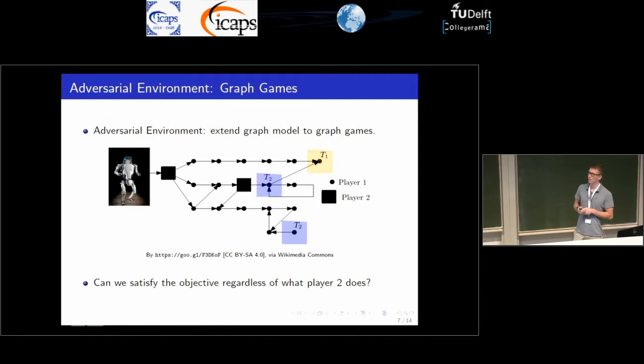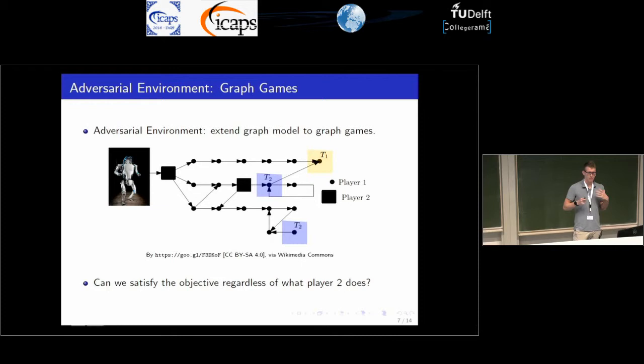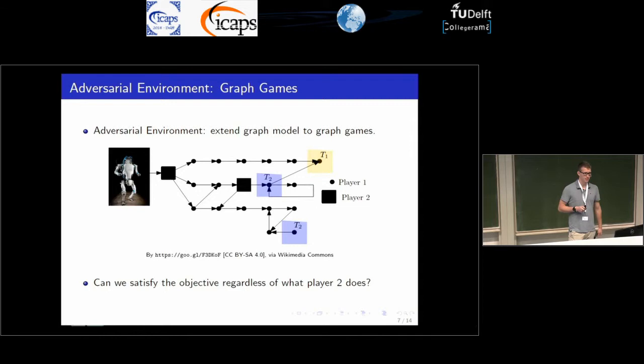The third model is the adversarial model. There is an opponent who wants to prevent us from achieving our objectives. In this case it's coverage, so the robot needs to reach a vertex in T1 and a vertex in T2. It's not possible because no matter what we do, Player 2 always has a strategy to lead us to a vertex where we cannot achieve any objective.